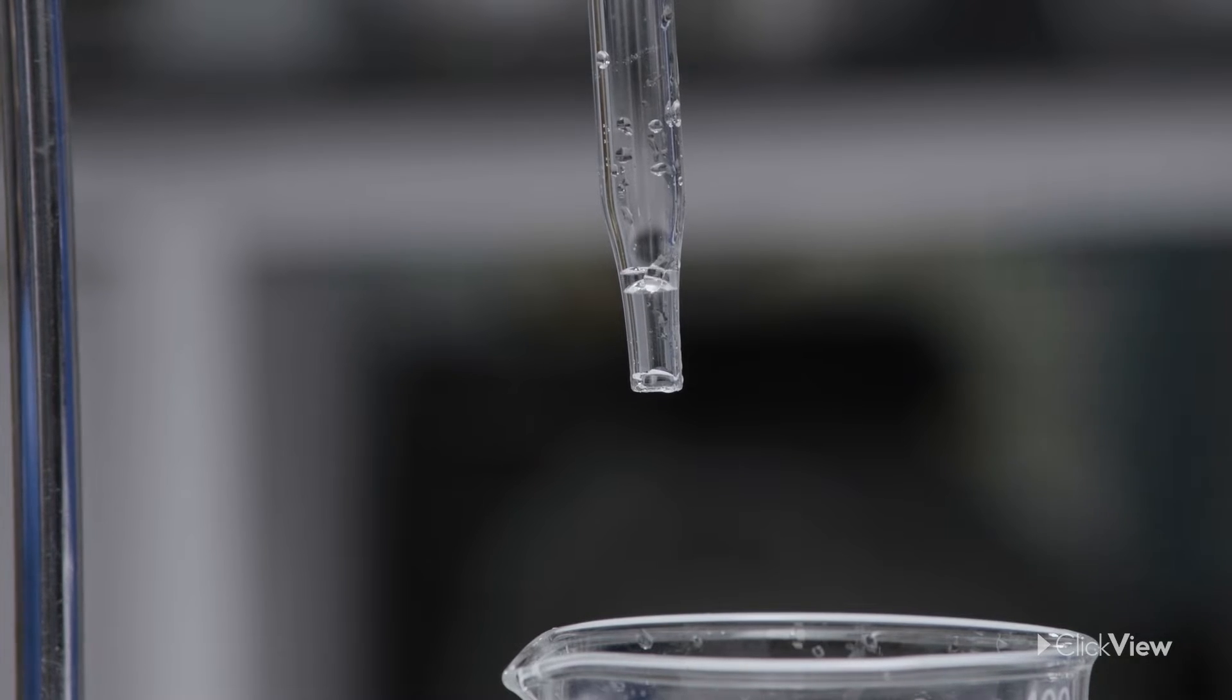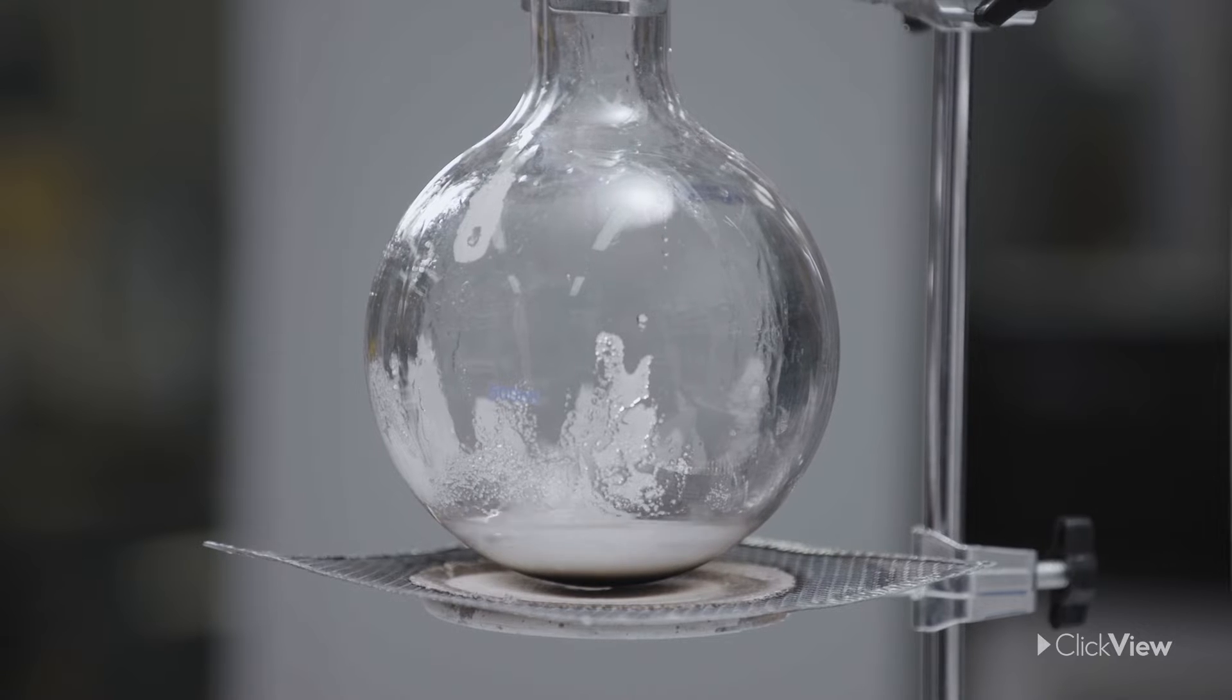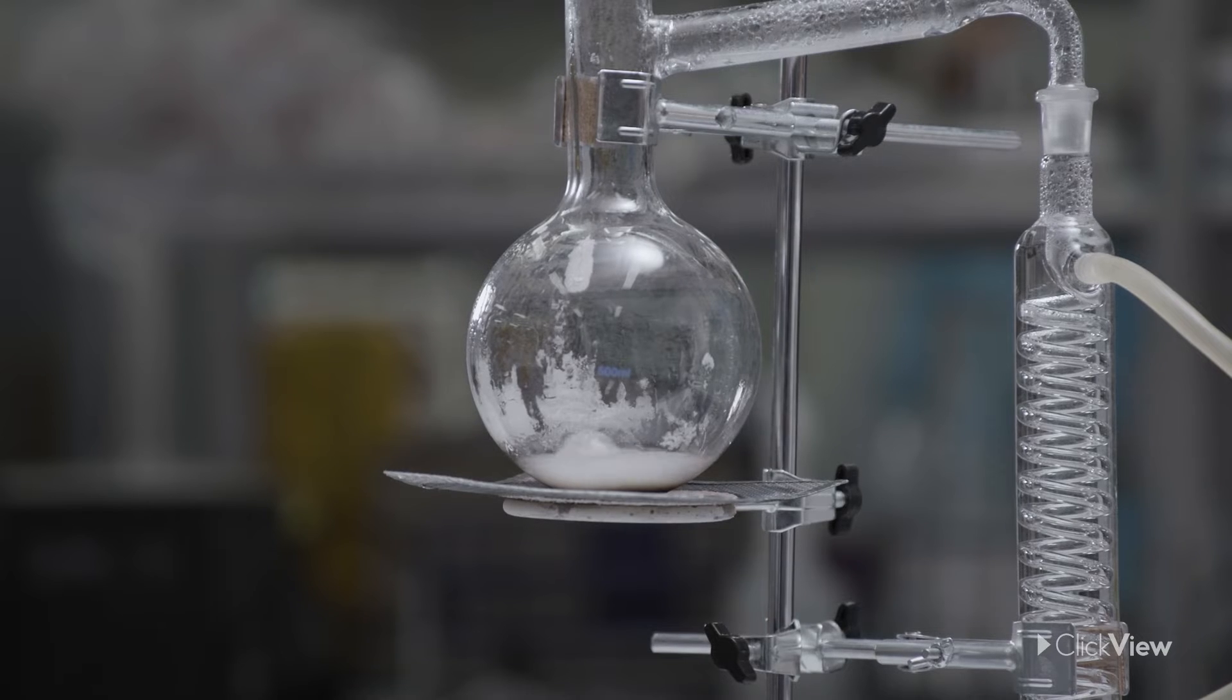Why is it purified? Because the impurities, the salts and the minerals, have higher boiling points than the temperature the Bunsen burner can reach. So they remain in solid form over on this side of the distillation apparatus.